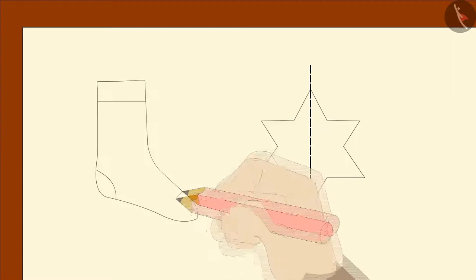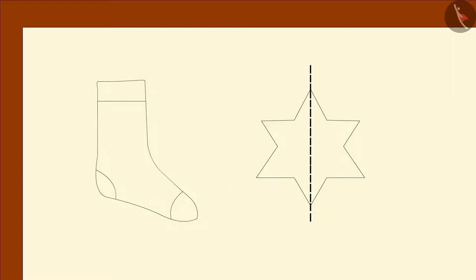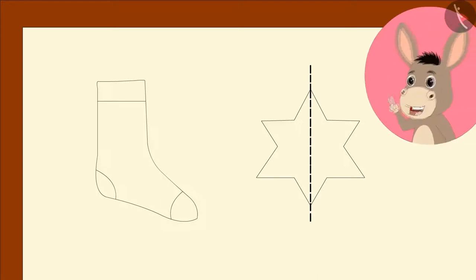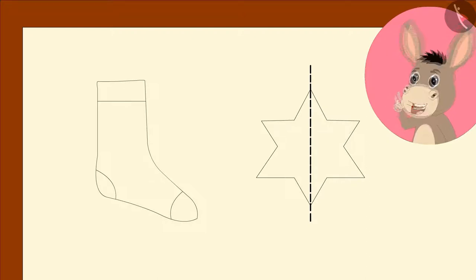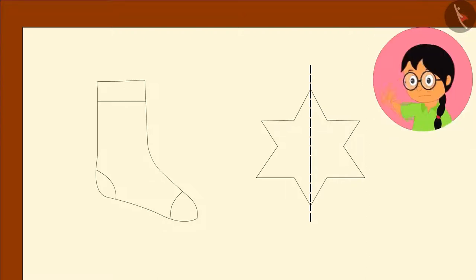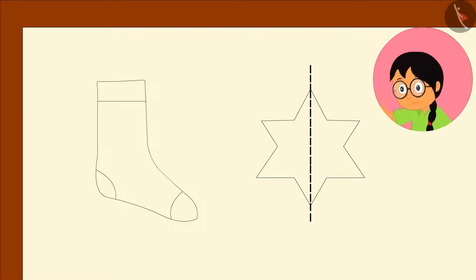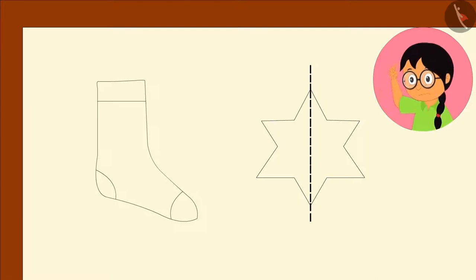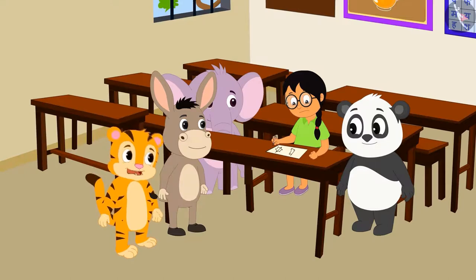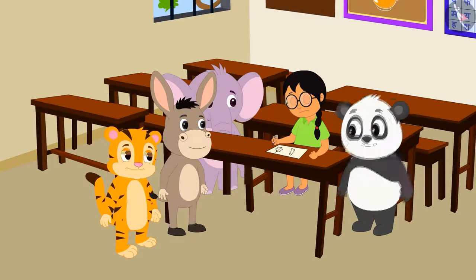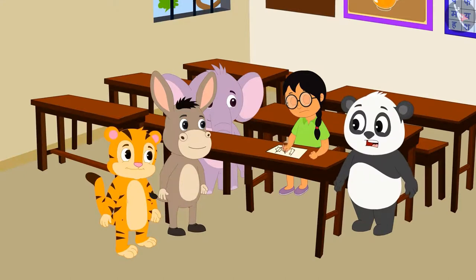Bhola draws a sock on the paper and tells Meenu: Can you divide this image into two similar parts by using a dotted line? Meenu thinks a lot and says: No, I can't. Shere Khan starts laughing at her and other children feel surprised that her magic has failed.